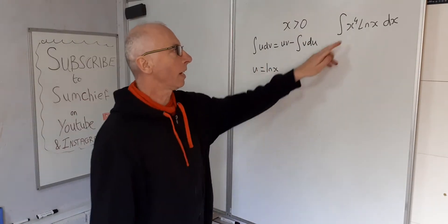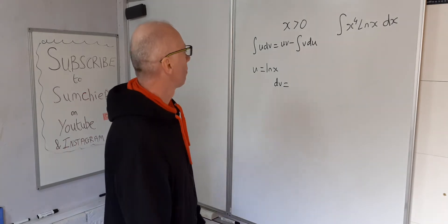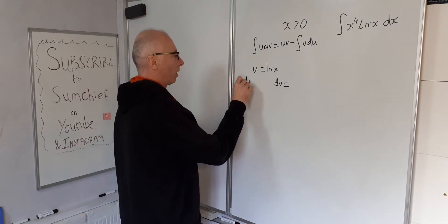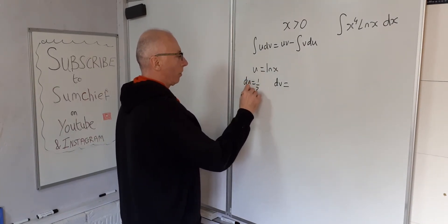Otherwise, we're not going to get anywhere because we're back into integration by parts again. So du equals 1 over x dx.